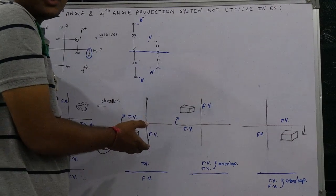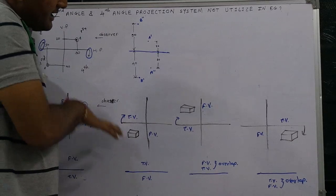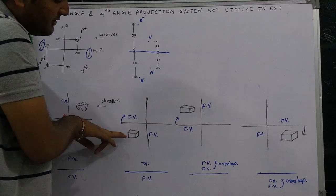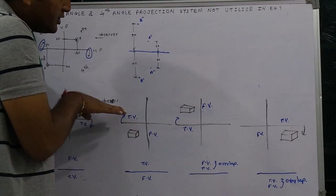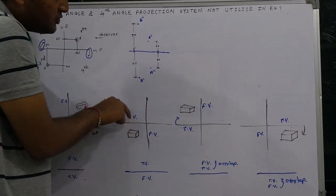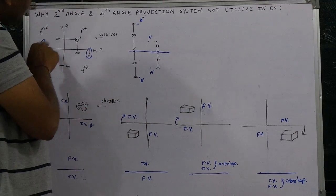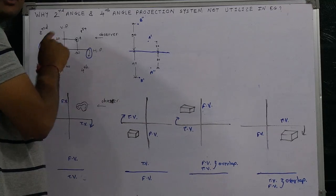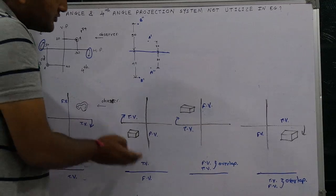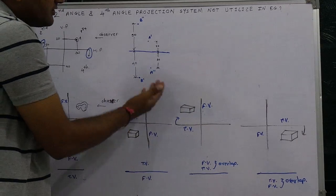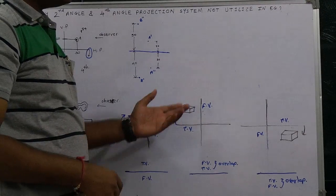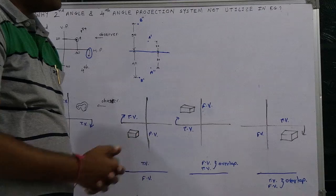In the third angle projection system, the observer is looking from the same direction. The front view lies on the vertical plane and the top view lies on the horizontal plane. From the projection of point rule, the horizontal plane must rotate in an upward direction. So in the third angle projection system, the top view is at the topward side and the front view is at the downward side.